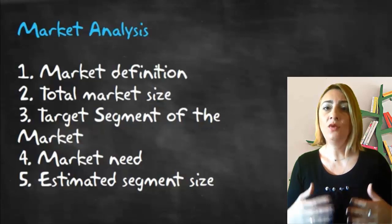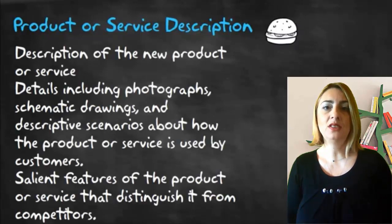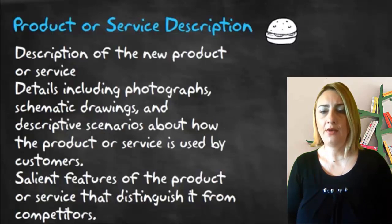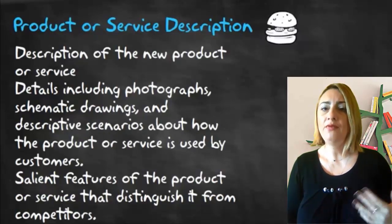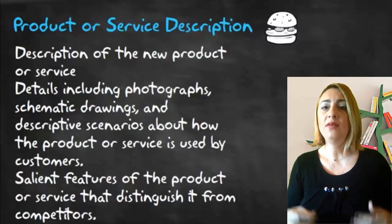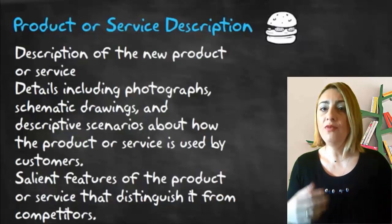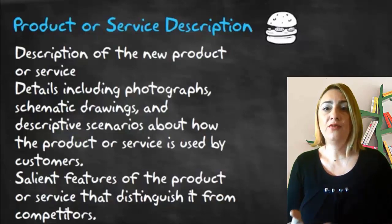The market analysis is followed by the product or service description, which includes details such as photographs and drawings. You may offer scenarios about how the product or service is used by customers, and features that distinguish it from competitors. Features refer to what the product is; benefits refer to what the product does — specifically, what benefits customers will gain as a result of a particular feature set.